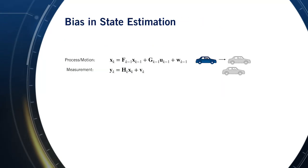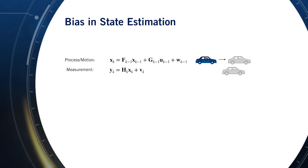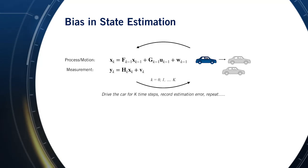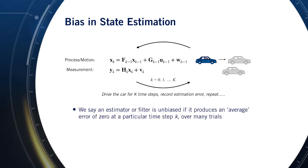Let's discuss bias. Consider our Kalman filter from the previous lesson used to estimate the position of our autonomous car. If we have some way of knowing the true position of the vehicle — for example, an oracle tells us — we can record a position error of our filter at each time step K. Since we're dealing with random noise, we'll need to repeat this process over and over and record the position error at each time step. Once we've collected these errors, if they average to zero at a particular time step K, then we say the Kalman filter estimate is unbiased at that time step.